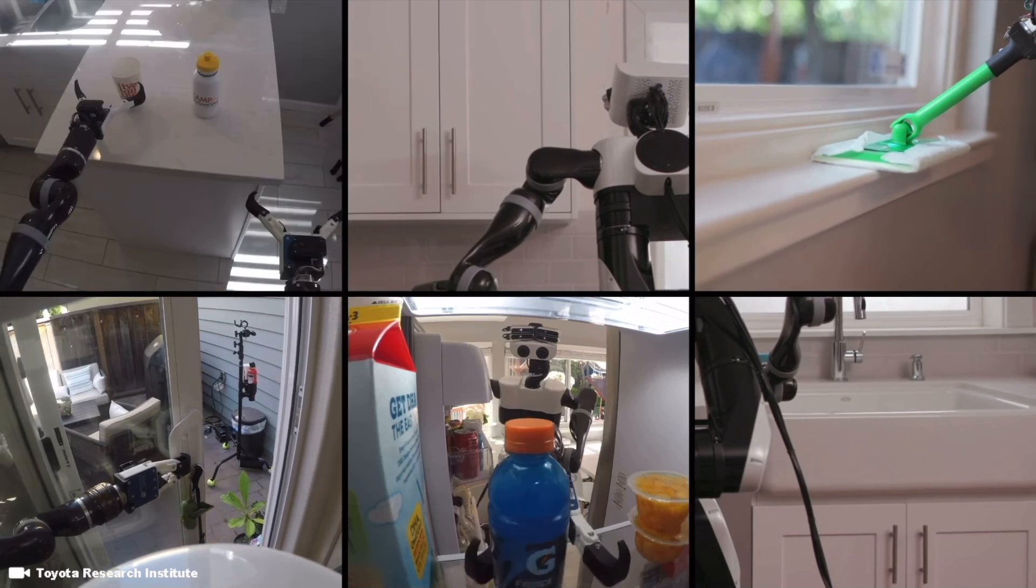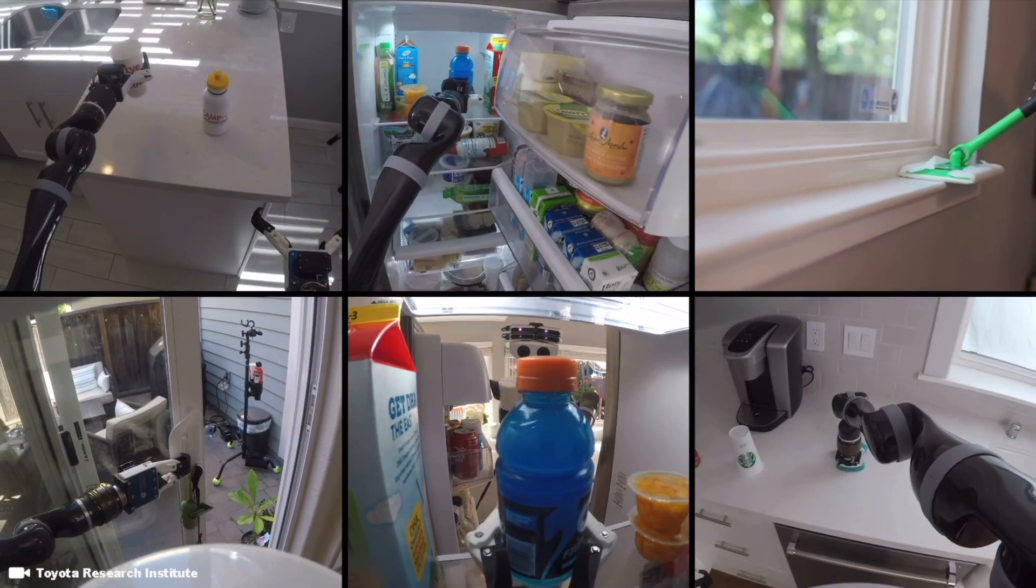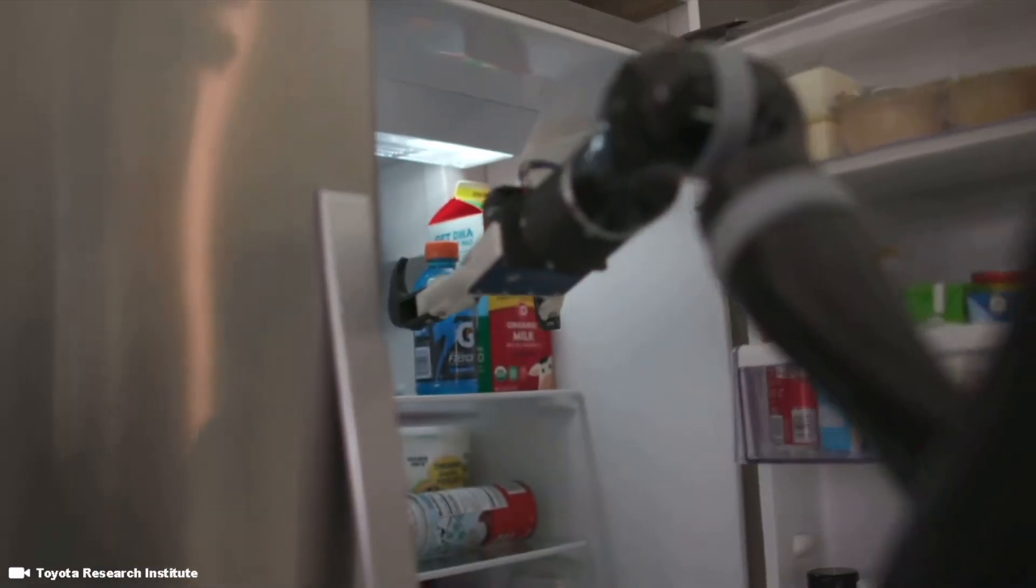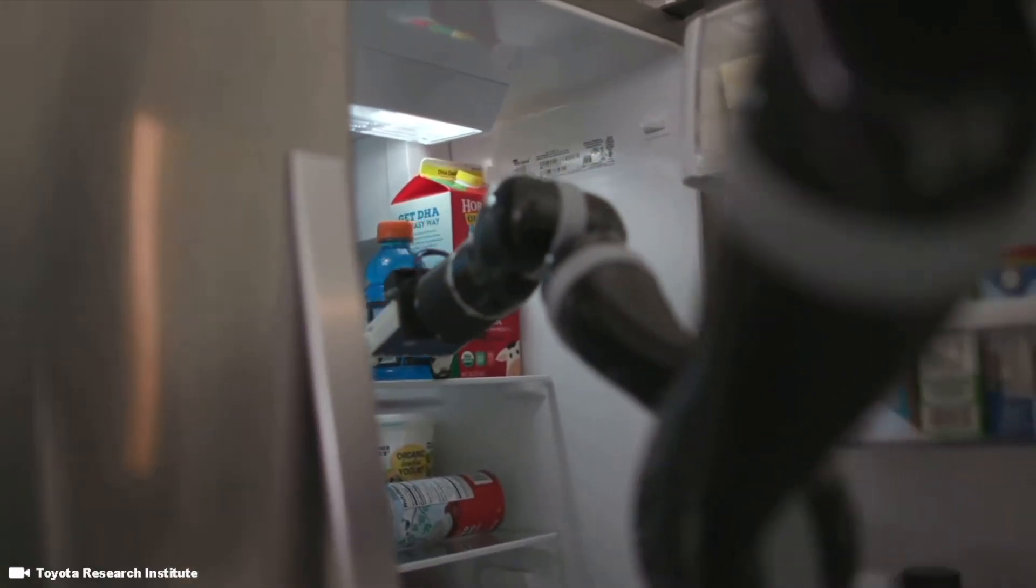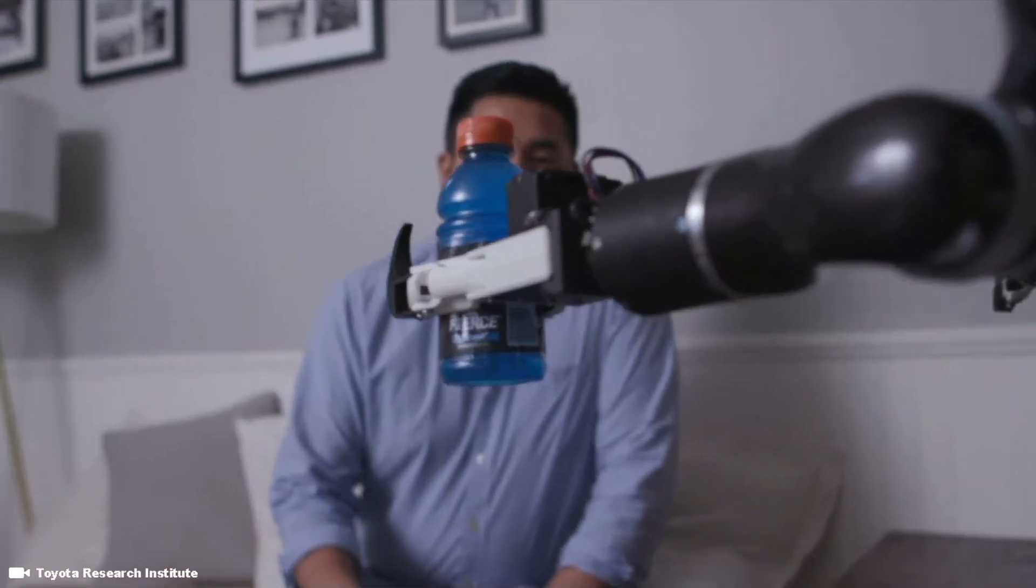Performing tasks in homes is extremely challenging for robots. Each home is unique, with a large number of objects arranged in different configurations. We demonstrate the effectiveness of our approach by presenting results for a variety of tasks under different environmental conditions in our lab and in real homes.